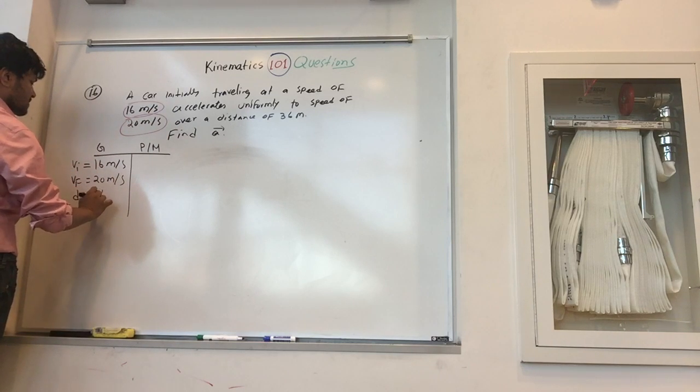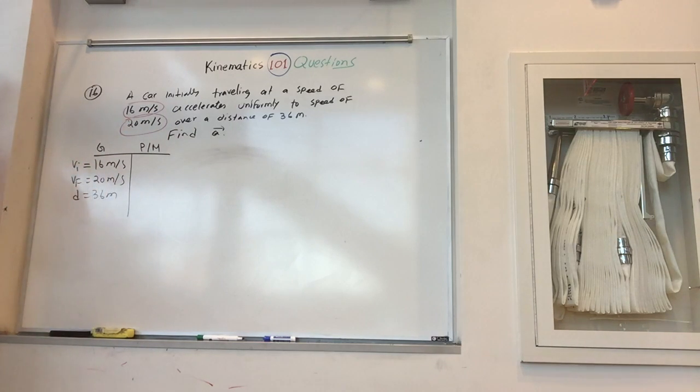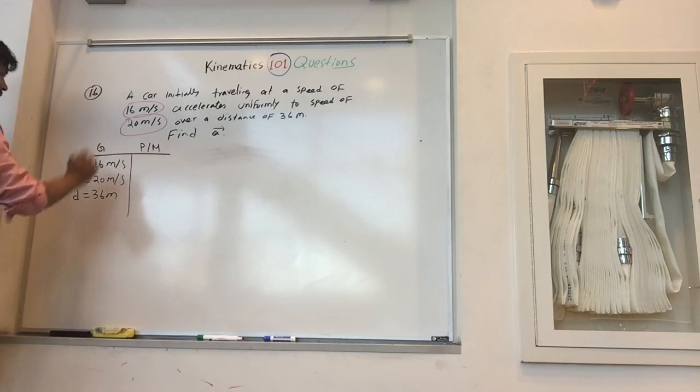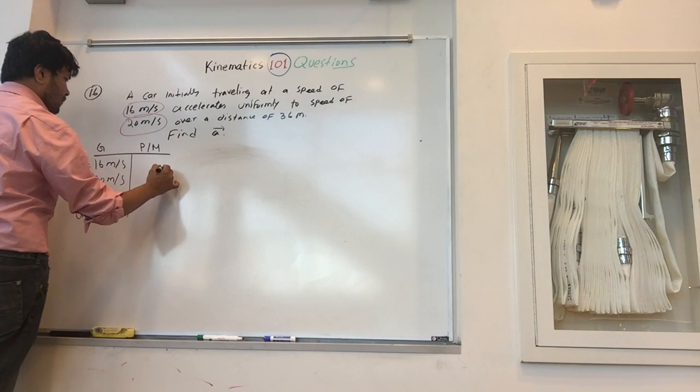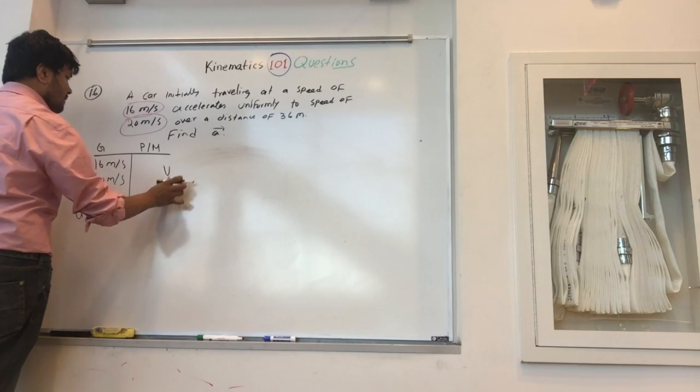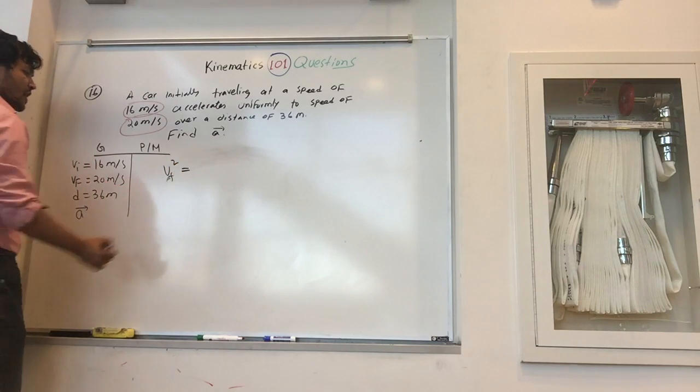Distance is 36 meters. We want to find the acceleration, so we're going to use this formula: v_i, v_f squared.